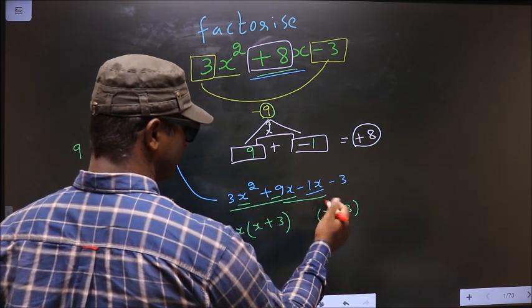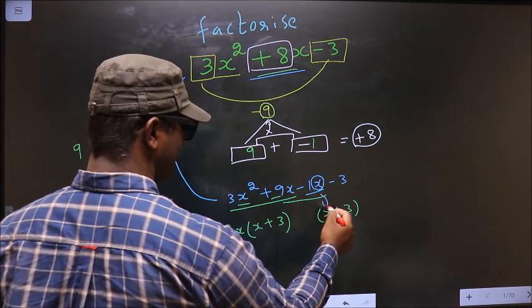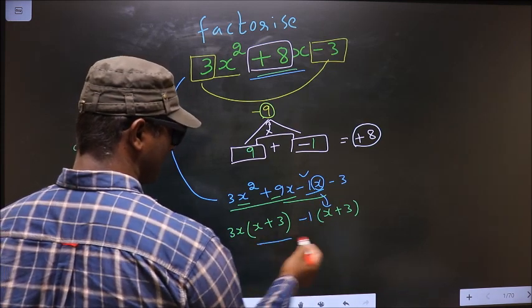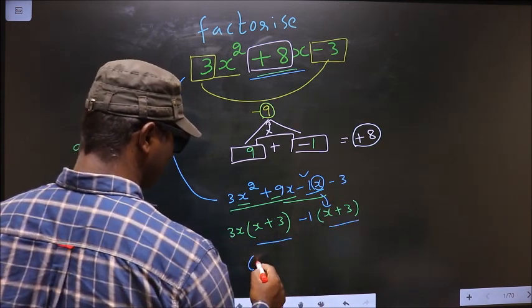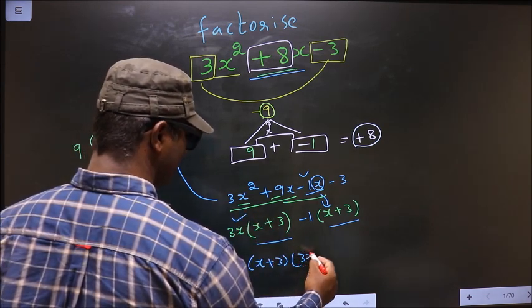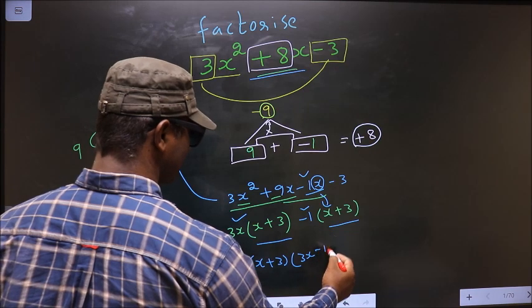Now, from this, x has gone inside. So outside, you are left with minus 1. Now, you take out x plus 3 common. So here you have 3x and here you have minus 1.